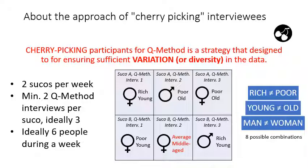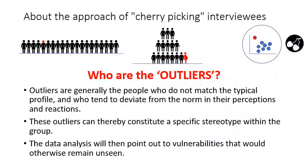Sometimes it's very easy to see who is the outlier. If you see a community of people, there's always somebody who stands out. Perhaps this little icon here shows exactly what an outlier is. But it really comes down to your instincts and your experience as a surveyor. Outliers are generally the people who do not match the typical profile or stereotype, and those who tend to deviate from the norm in their perceptions and reactions. These outliers can thereby constitute a specific stereotype within the group — and these are the ones you actually want to select.